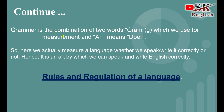The last definition is: grammar is the combination of two words. The first one is 'gram', which is used for measurement، اور دوسرا لفظ ہے 'ur', which means doer — the person who does something. So here we actually measure a language whether we speak or write it correctly or not. یہ ایک ایسا art ہے جس کے ذریعے ہم کسی language کو صحیح بول سکتے ہیں یا صحیح لکھ سکتے ہیں۔ So اگر دو words میں conclude کریں تو grammar ہے rules and regulation of a language۔